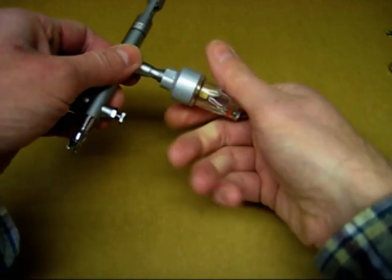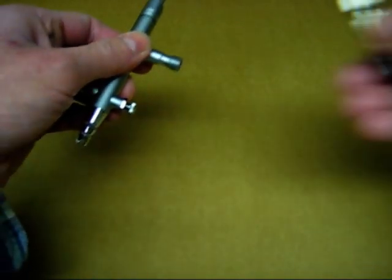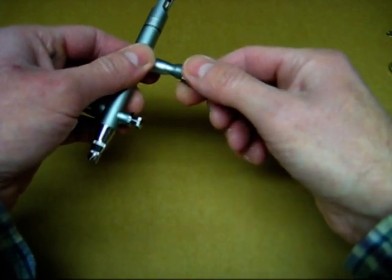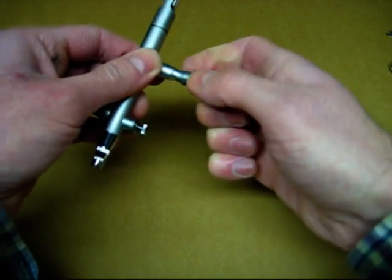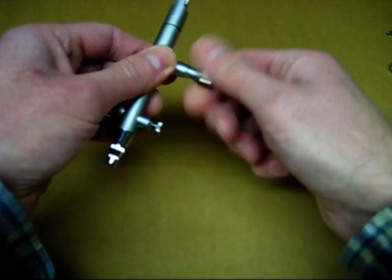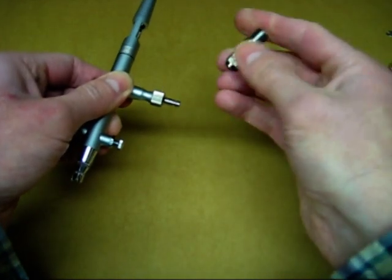You also get, if you didn't want to use that, a quick release connector. It just screws to the bottom. Your hose fits that end.